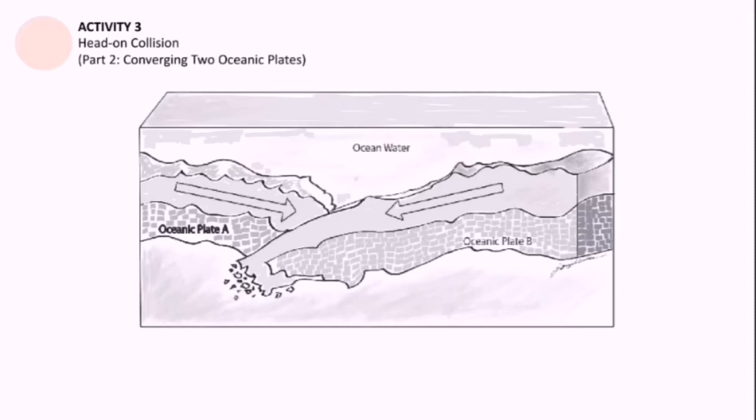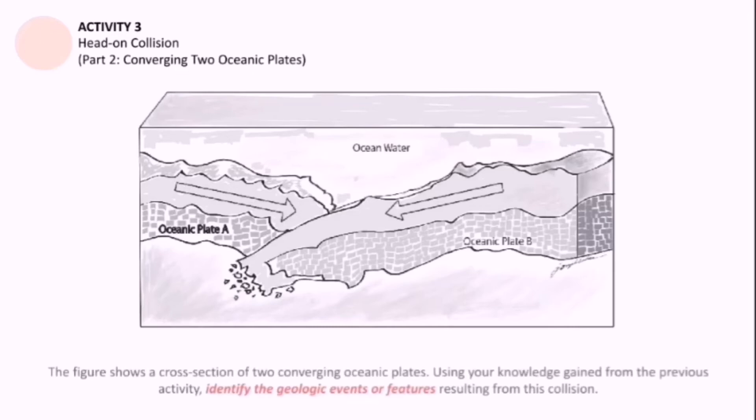Oceanic plate B, observe that its leading edge is being broken into fragments. Those fragments tend to tell us that it is indeed melting. Remember it's going downwards and as you go downwards in the geosphere, the temperature is rising. This figure shows a cross-section of two converging oceanic plates. Using your knowledge gained from the previous activity, identify the geologic events or features resulting from this collision. For the events, we have earthquakes, volcanic eruptions. And for the features, we have volcanic arc island and trenches.